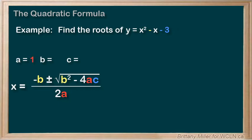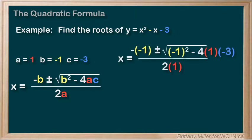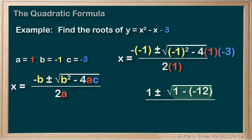a is 1, b is negative 1, and c is negative 3. The next step is just to plug them into the formula and simplify. Negative 1 squared is 1. 4 times negative 3 times 1 equals negative 12. 1 minus negative 12 is equal to 1 plus 12, which is 13. And then 2 times 1 is just 2.